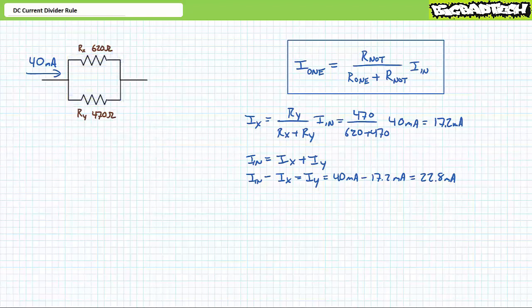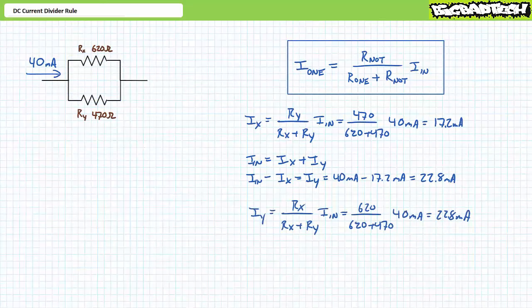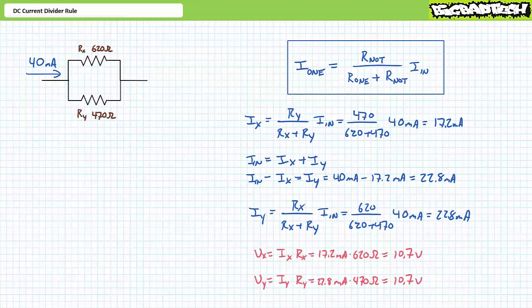As a means of checking our work, another application of the current divider rule set up to solve for IY similarly demonstrates 22.8 milliampers of current is traveled through RY. As a final means of checking our work, you'll note an application of Ohm's law demonstrates 17.2 milliampers of current traveling through a 620 ohm resistor results in a roughly 10.7 volt drop, as does 22.8 milliampers routed through a 470 ohm resistor. Voltage across these parallel elements is indeed the same, and what comes in does indeed come out.